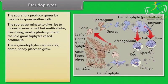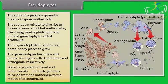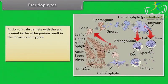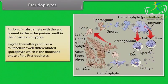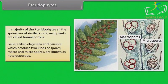These gametophytes require cool, damp, shady places to grow. The gametophytes bear male and female sex organs called antheridia and archegonia respectively. Water is required for transfer of antherozoids — the male gametes released from the antheridia — to the mouth of the archegonium. Fusion of the male gamete with the egg present in the archegonium results in the formation of a zygote. The zygote thereafter produces a multicellular, well-differentiated sporophyte, which is the dominant phase of the pteridophytes. In the majority of pteridophytes, all spores are of similar kinds — such plants are called homosporous. Selaginella and Salvinia, which produce two kinds of spores (macro and microspores), are known as heterosporous.